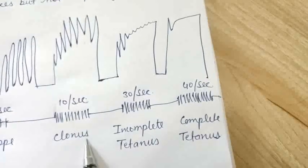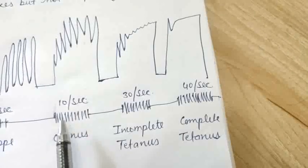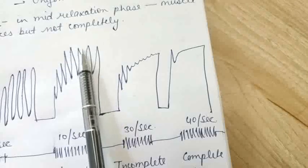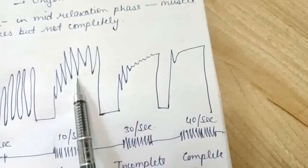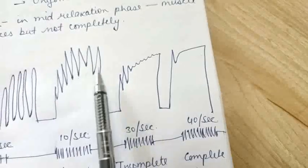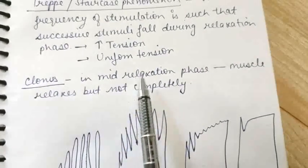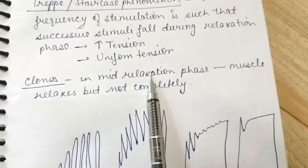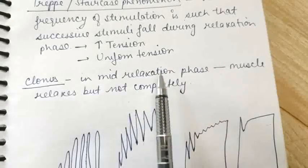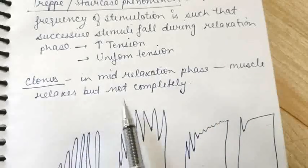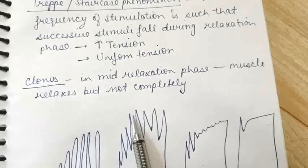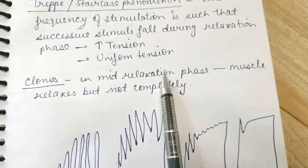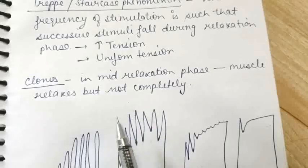Next is clonus, where we increase the frequency further to 10 to 15 stimuli. You can see some beneficial effect at the start, then uniform amplitude, but the muscle is not able to fully relax. Clonus is where the frequency of stimulation is such that successive stimuli fall during the mid or early relaxation phase. The muscle relaxes but not completely — it undergoes contraction again because stimulation falls during early relaxation phase.